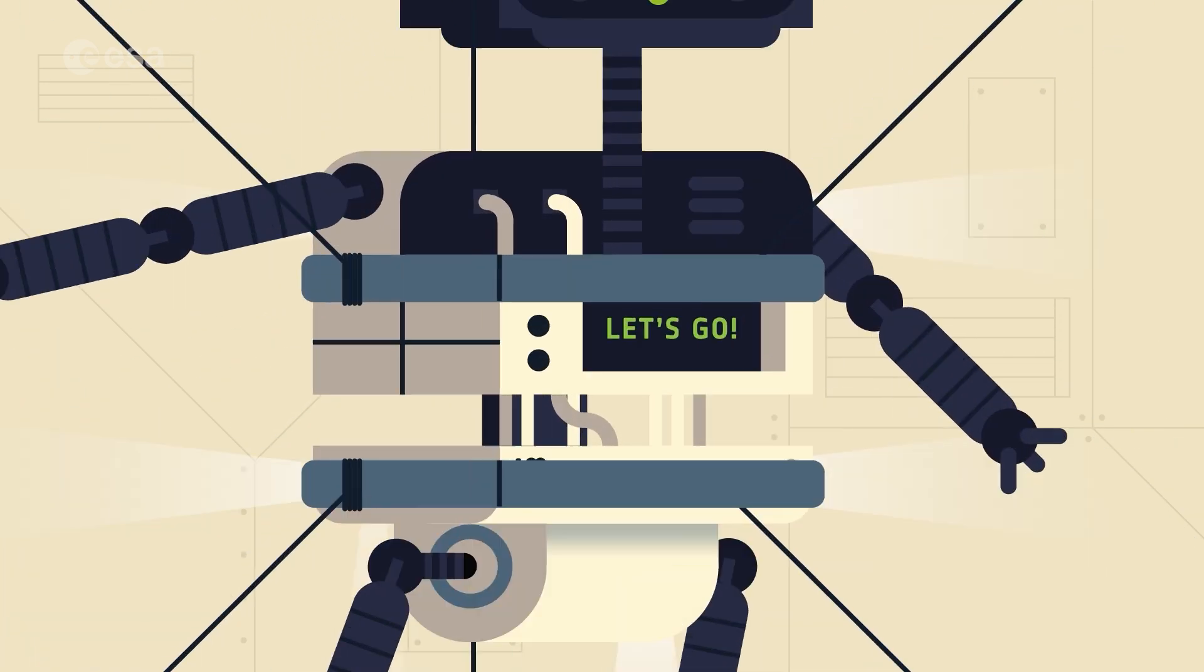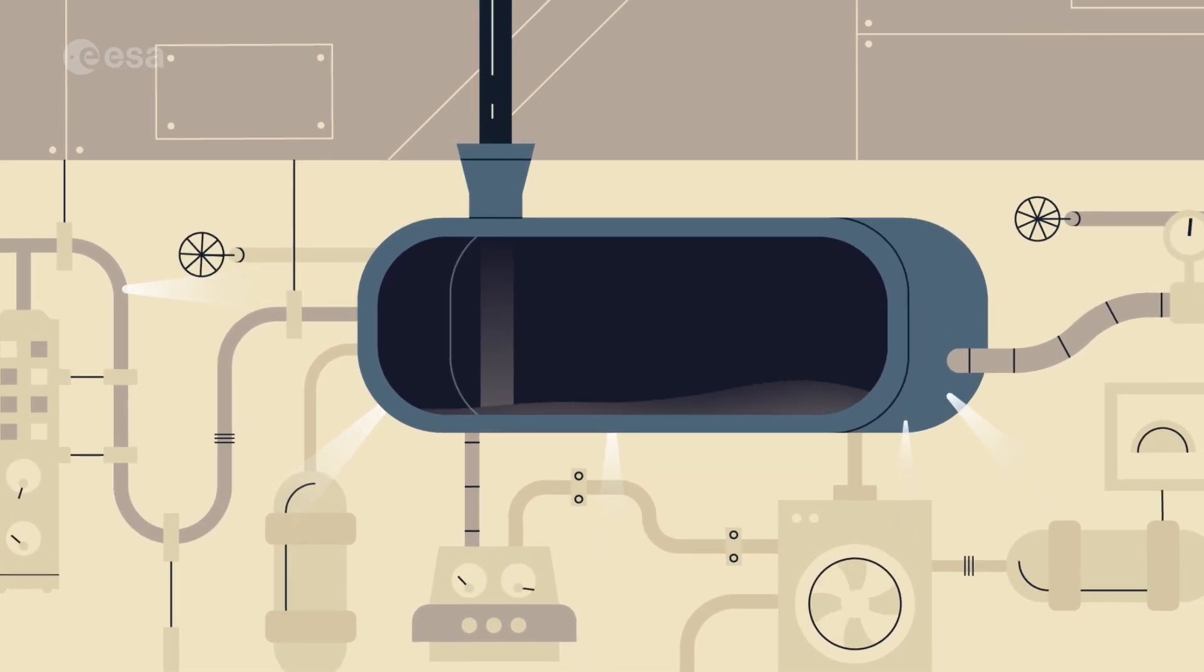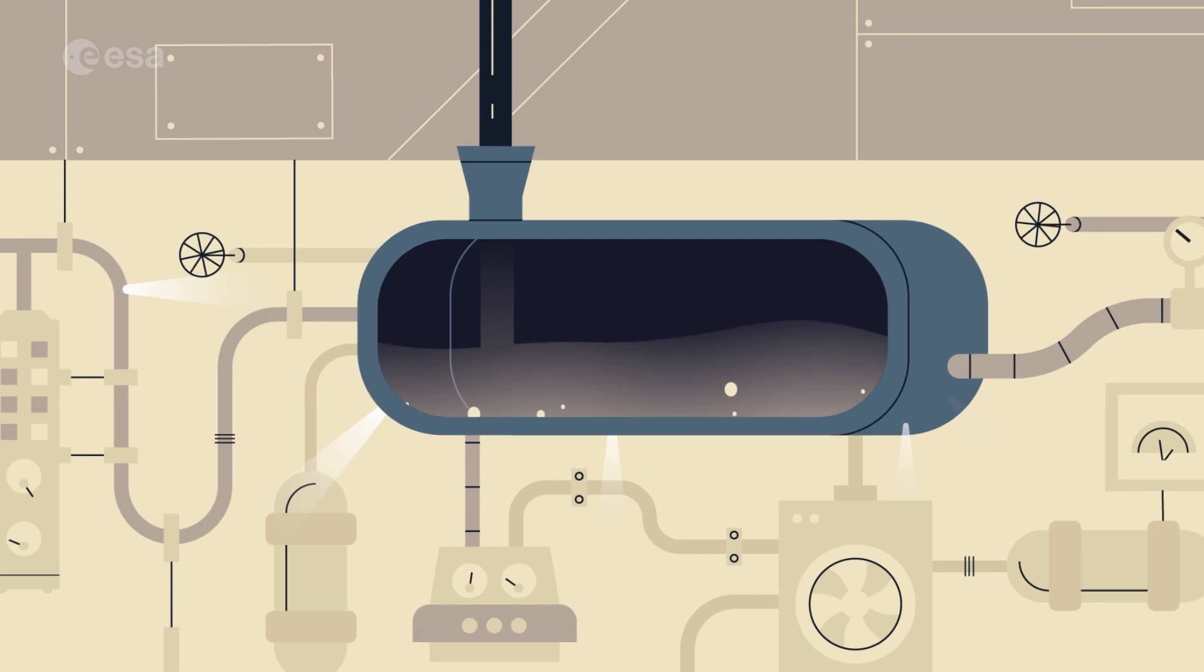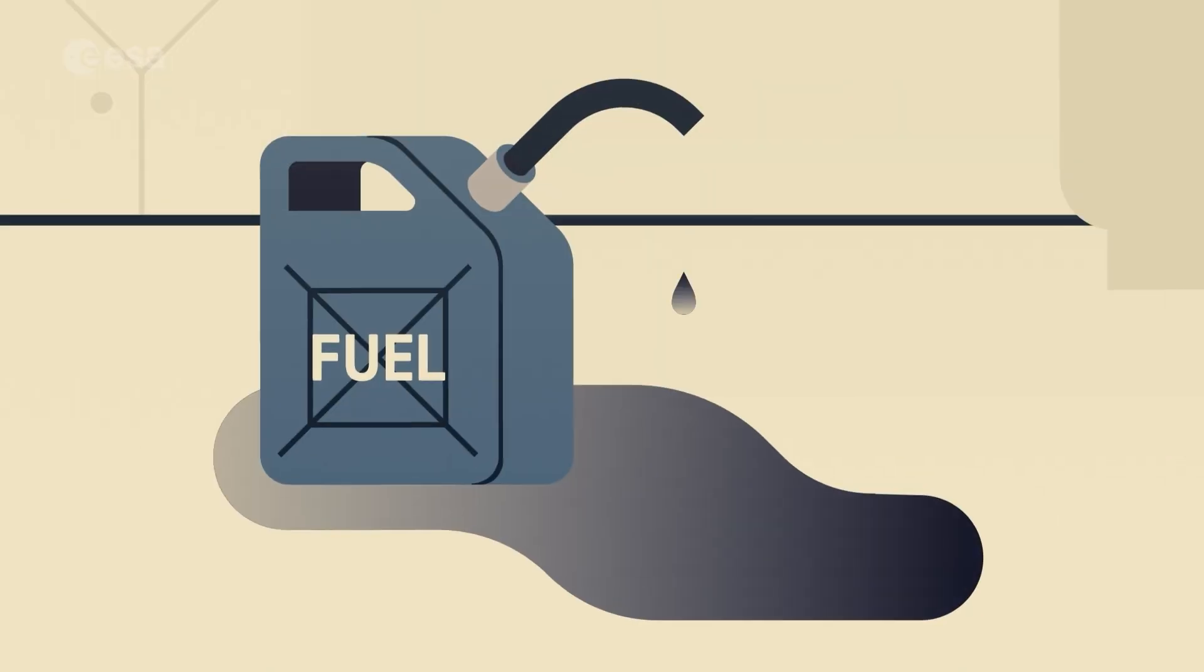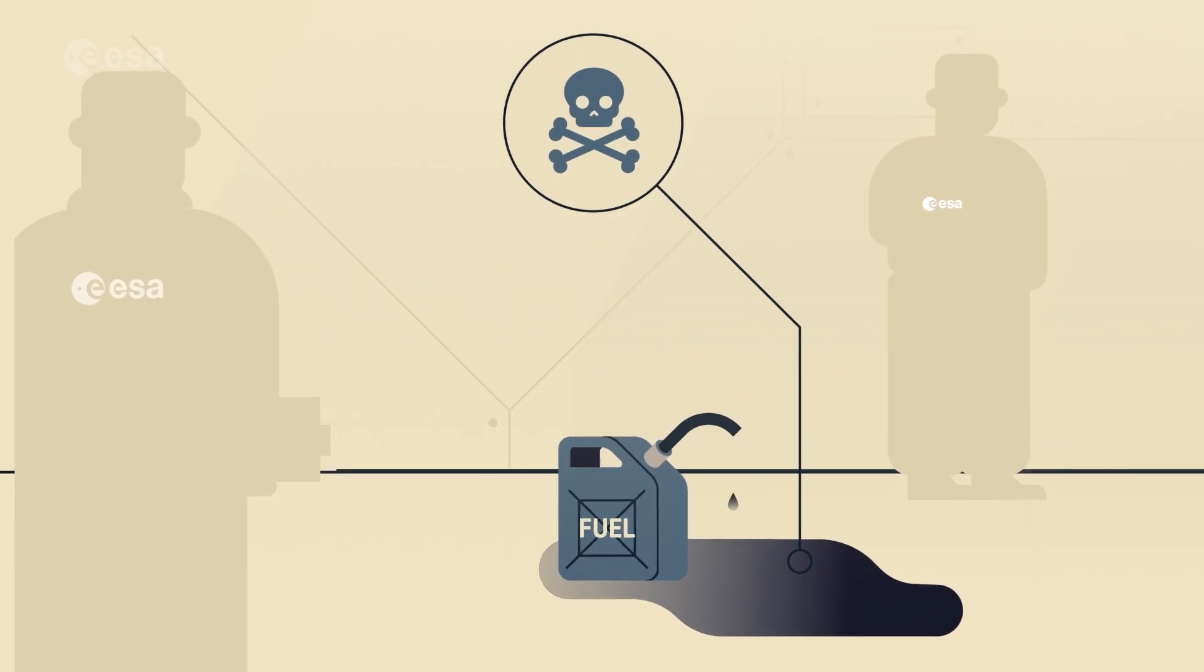HERA's fuel tanks will then be filled with an inert gas to make sure there are no leaks. You might wonder why not use real fuel instead. Well, HERA's fuel is toxic to humans, so the engineers may object.